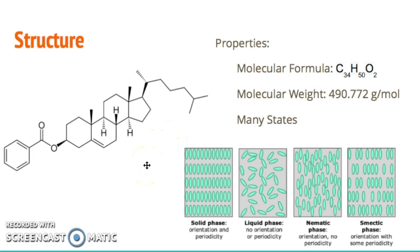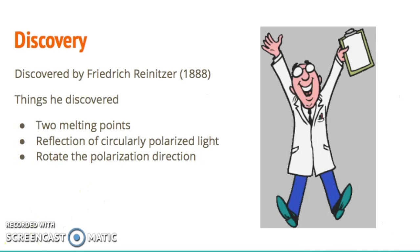It was discovered by Friedrich Reinitzer in 1880, and he discovered three things. One, the existence of two melting points. Two, the reflection of circularly polarized light. And three, the ability to rotate the polarization direction of light.